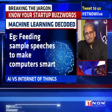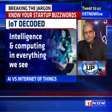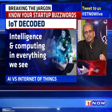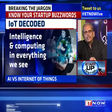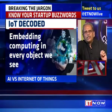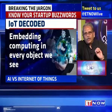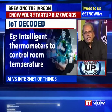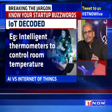Internet of Things is completely different. It means that there is intelligence or computing in everything that we see. For example, there could be intelligence built into a thermometer which controls the room temperature, or there could be intelligence in the car that directs you to go to a particular location — like the GPS in your car.